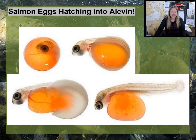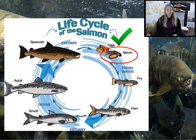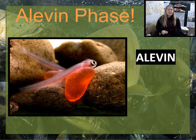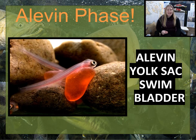Your eggs will hatch and transform into small alevin hiding within the gravel bed until they can swim freely. After a few months, the eggs hatch into alevin. The alevin stay in their gravel nest until they've used up all of the nutrients in their yolk sac and are strong enough to swim and inflate their swim bladder by taking a gulp of air at the water surface.